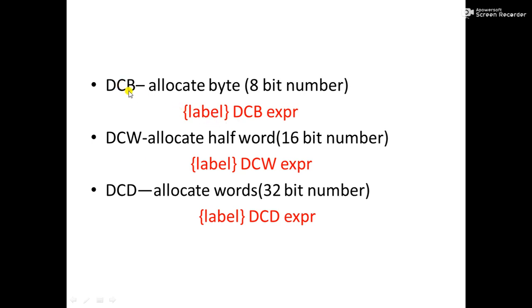The syntax for these directives is: provide a label (the name), then the directive (DCB, DCW, or DCD), then the expression or number. DCB allocates 8-bit memory, DCW allocates 16-bit memory, and DCD allocates 32-bit memory for the respective values. This approach optimizes memory usage by allocating only what is needed.